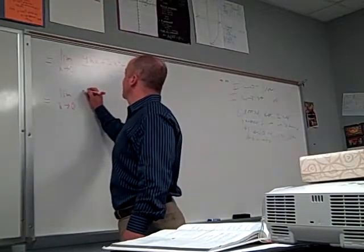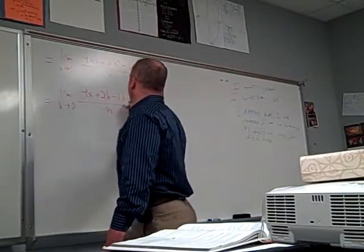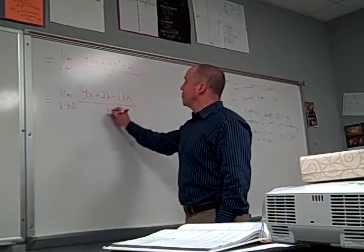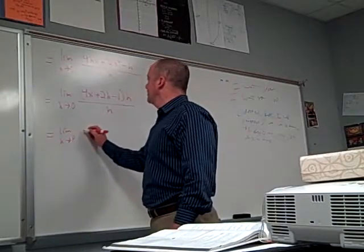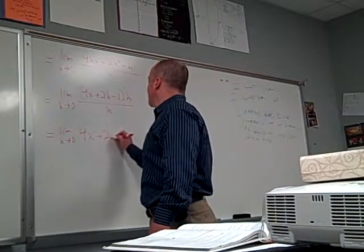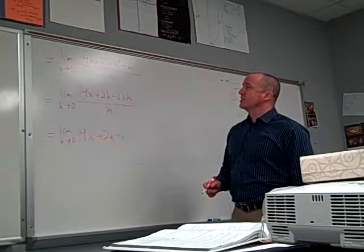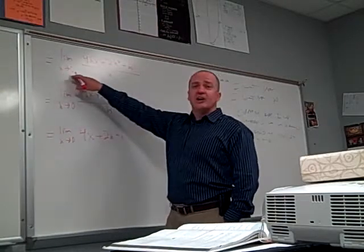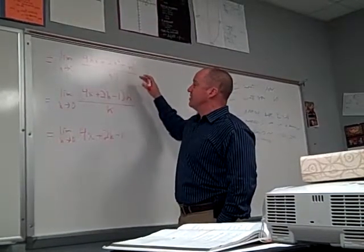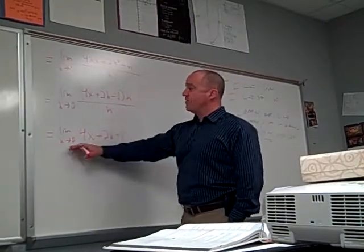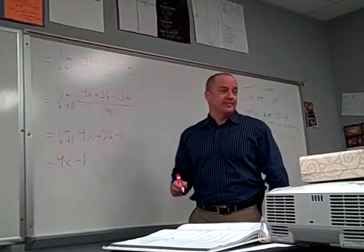The limit as h approaches 0 of 4x plus 2h minus 1 times h over h. And we did this with the difference quotient at the beginning of the year. And the h's always cancel nicely on polynomials. And you get the limit as h approaches 0 of 4x plus 2h minus 1. Now, the limit is like a dog on a leash. If you let the dog off the leash too soon, if you let h equal 0, you will get 0 over 0 in every step of the problem up until this one. Now, if we let h equals 0, what do we get? 4x minus 1.